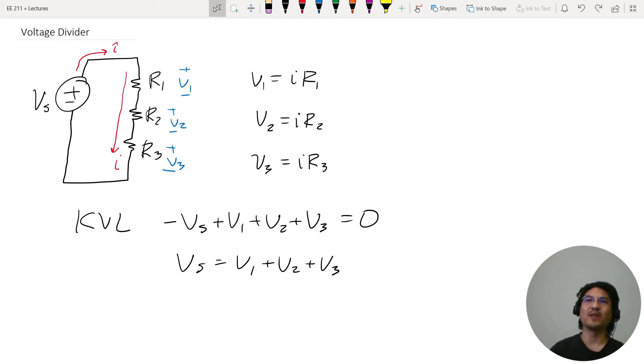Now what are the voltages? Can we get an expression for the current? We know that the equivalent resistance of these in series looks like some equivalent resistance is going to just be R1 plus R2 plus R3, because they're in series.